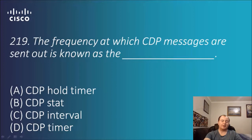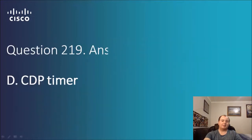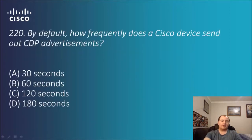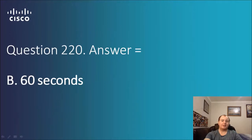Question 2.19: the frequency at which CDP messages are sent out is known as what? Options are CDP hold timer, CDP start, CDP interval, or CDP timer. The answer is D — CDP timer. Question 2.20: by default, how frequently does a Cisco device send out CDP advertisements? The answer is B — every 60 seconds.